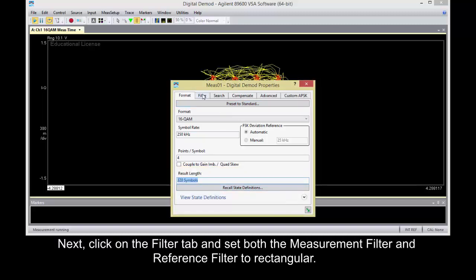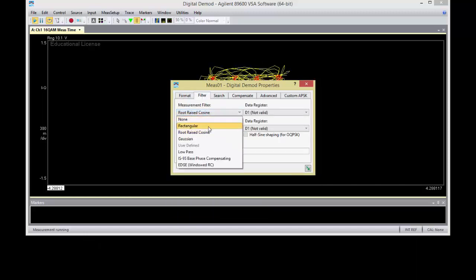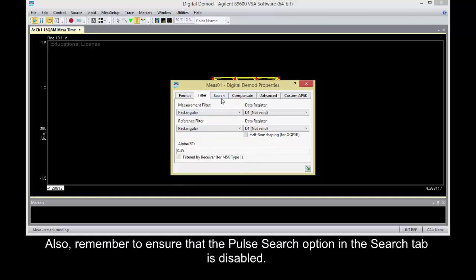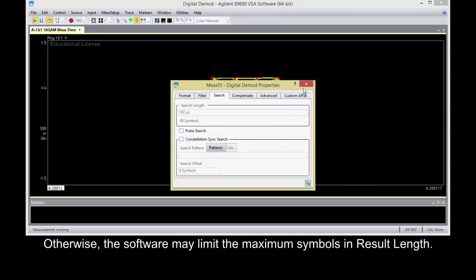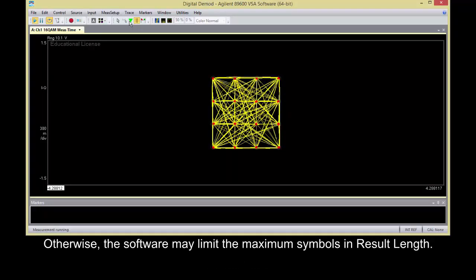Next, click on the Filter tab and set both the Measurement Filter and Reference Filter to Rectangular. Also, remember to ensure that the Pulse Search option in the Search tab is disabled. Otherwise, the software may limit the maximum symbols in result length.